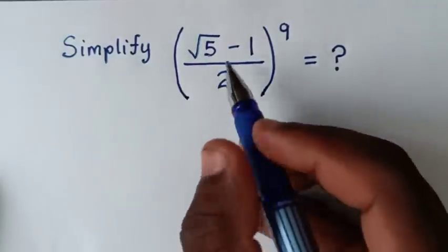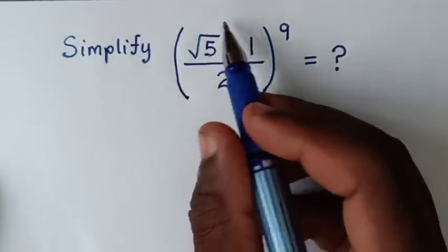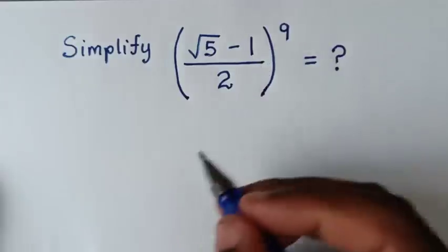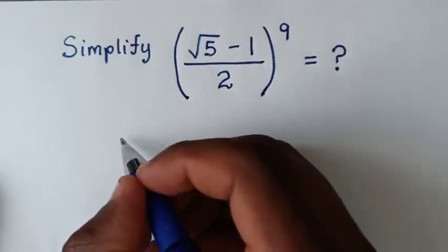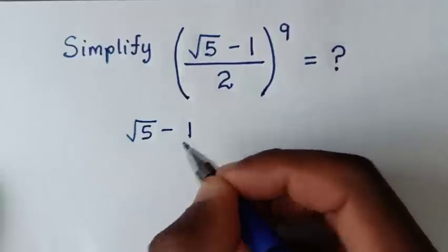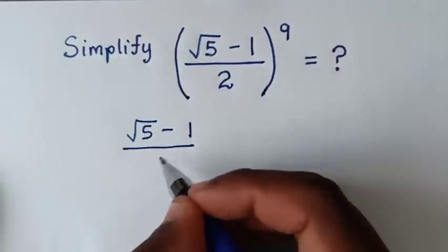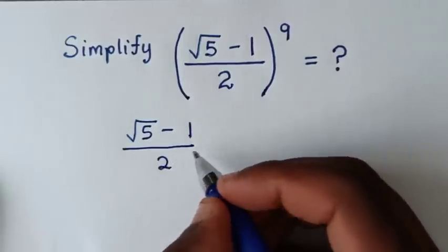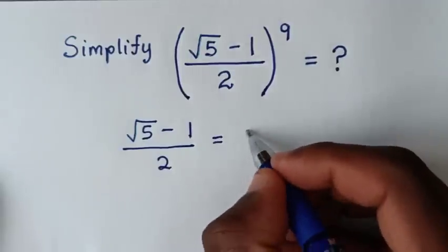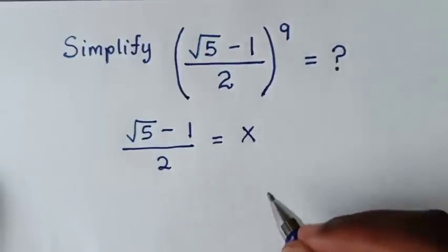In the first step, we will start by letting the expression inside the bracket equal x. So, x equals square root of 5 minus 1, over 2.